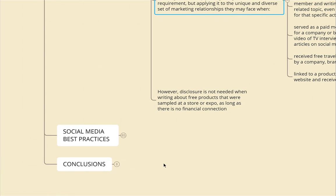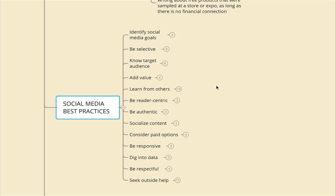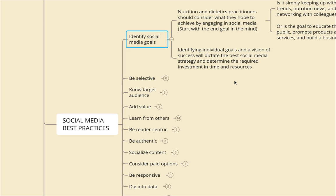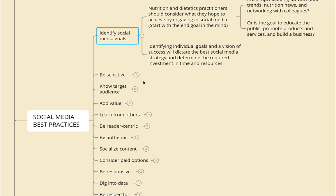For social media best practices, first identify your social media goals. Consider what you hope to achieve by engaging on social media — start with the end goal in mind. Is it simply keeping up with food trends and nutrition news, or networking with colleagues? Or is the goal to educate the public, promote products and services, and build a business? Identifying individual goals and a vision of success will dictate the best social media strategies and determine the required investment in time and resources. Be selective.